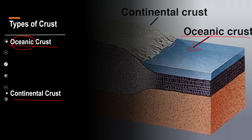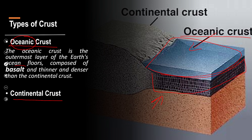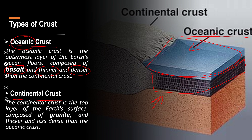The oceanic crust is the part of the crust on which oceans and seas are present. It is made up of basalt - it is thinner but denser. Then comes the continental crust. By the name you can judge - it has land on it. The continental crust is made up of granite. It is thicker than oceanic crust but it is less dense. So these are the two types of crust.